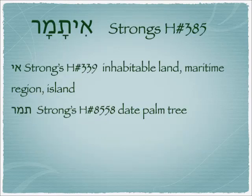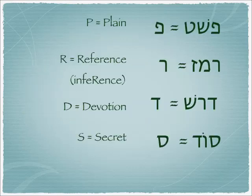The fourth son is Itamar. 'Ei' is a word meaning an inhabitable land, generally a maritime area or even an island. And Tamar is the date palm tree. Tamar is a name that appears frequently also by itself.